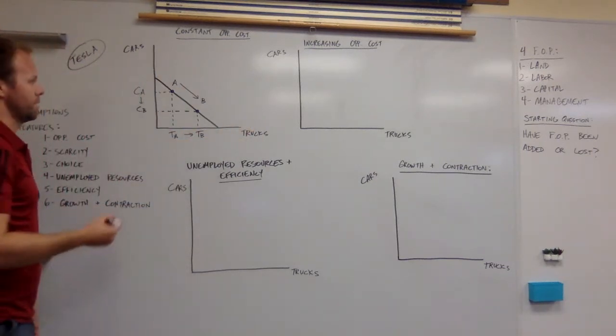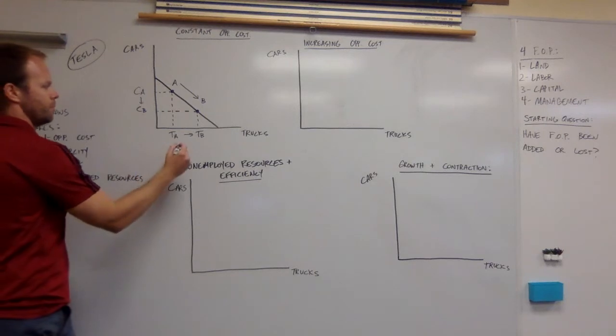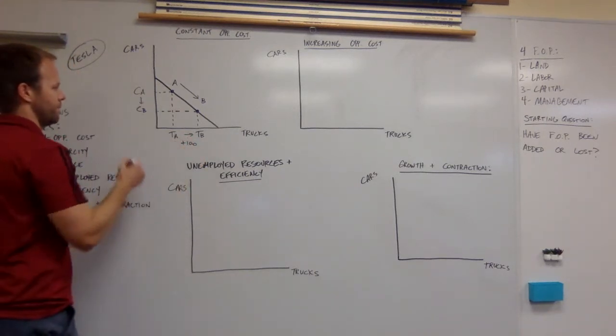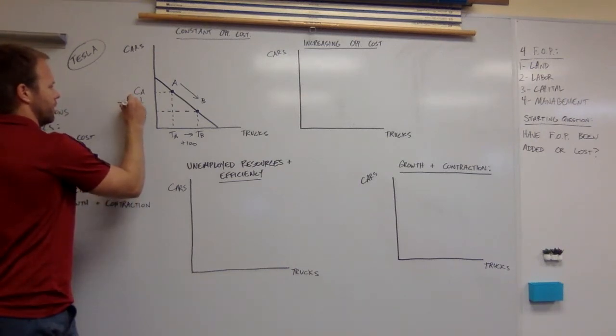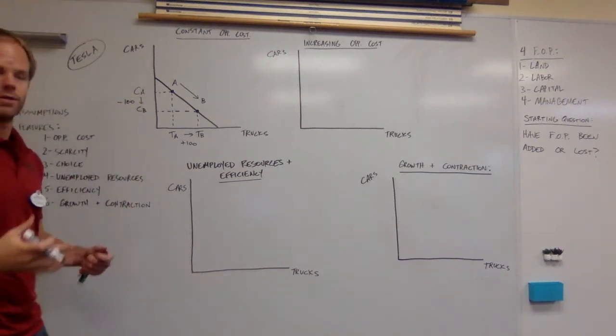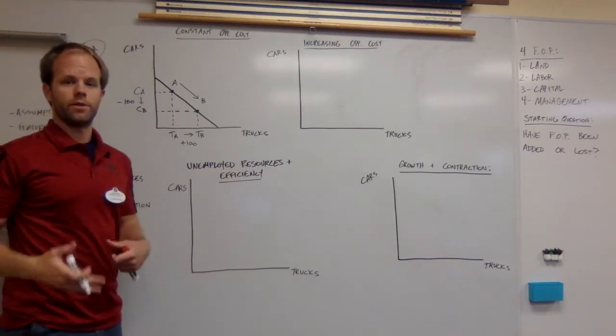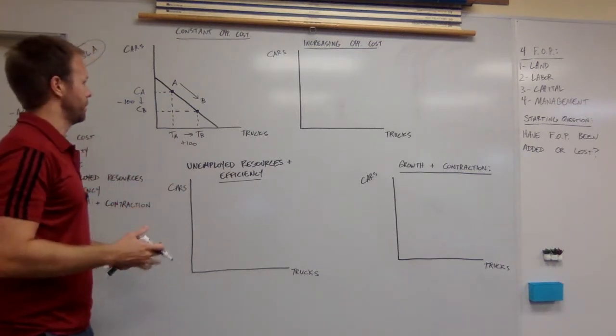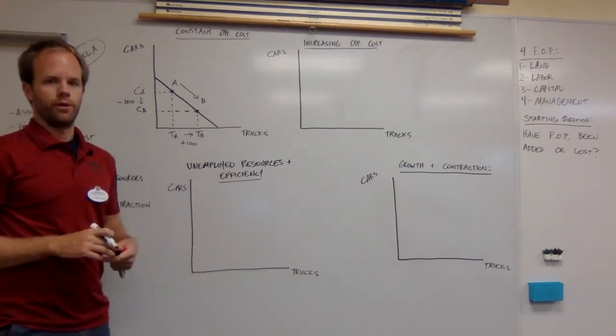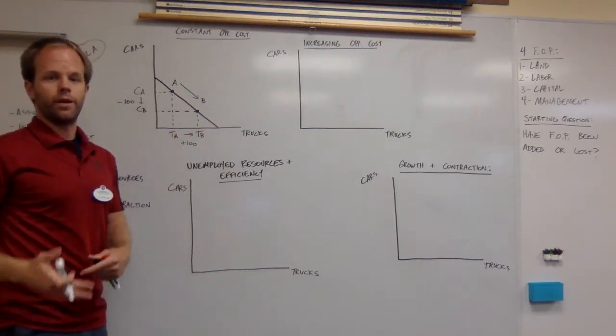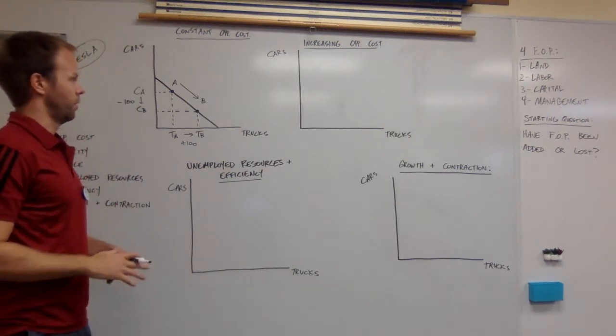In this case, the opportunity cost is constant. Whether they shift from here to here or A to B or B to C, the rate of the opportunity cost is going to stay the same no matter where you are in the curve. Let's say in order to make 100 more trucks, they had to give up 100 cars, because they only have so much land, so much labor, so much capital. Constant opportunity cost - no matter where you are in the curve, the rate of opportunity cost is the same.